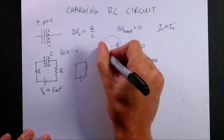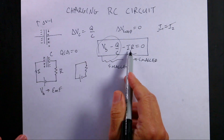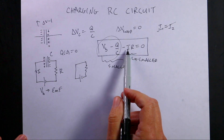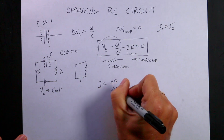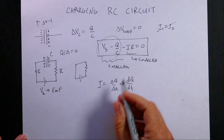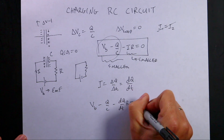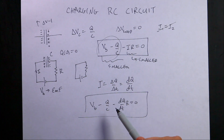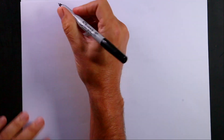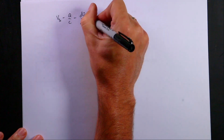What we want to do is use this equation to solve for Q as a function of time, and from that get I as a function of time. The definition of current is I equals dQ/dt. Substituting that in gives us: V_B minus Q over C minus (dQ/dt)R equals zero. This is a differential equation that only has Q's and T's in it, and that's what we're going to solve.